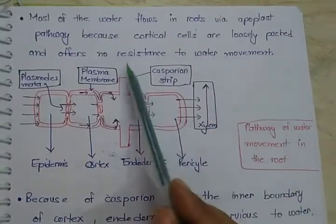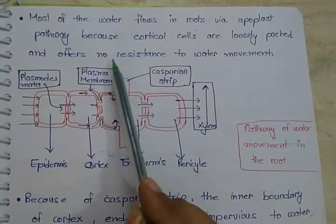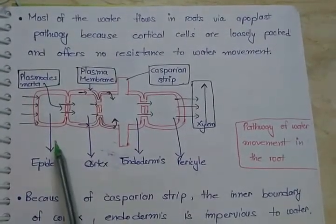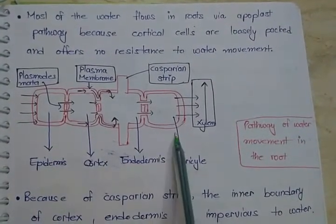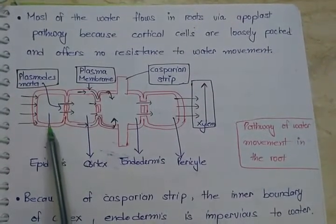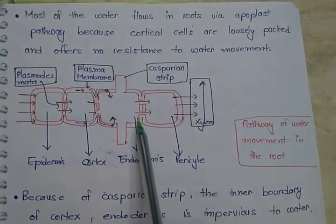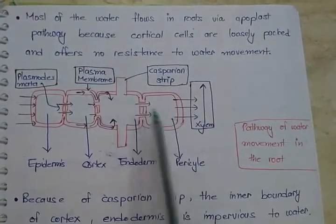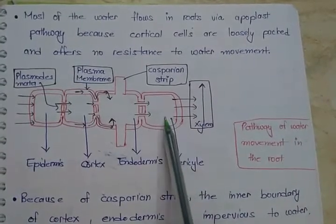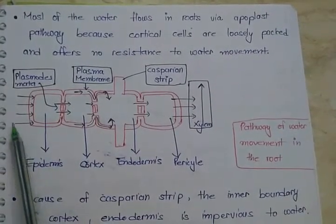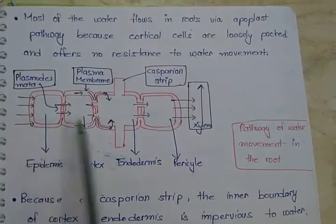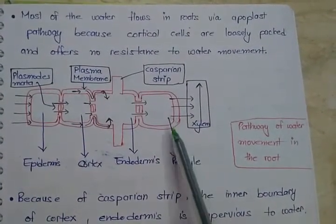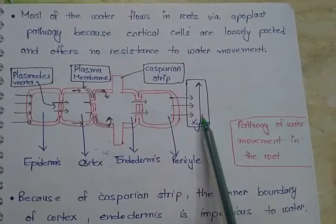This diagram shows the pathway of water movement in plants. First Epidermis, then Cortex, after this Endodermis. In Endodermis, Casparian Strip is present. After Endodermis, Pericycle is present. Water moves from Epidermis, then Cortex, then Endodermis, then Pericycle, and after the Pericycle it enters into the Xylem.